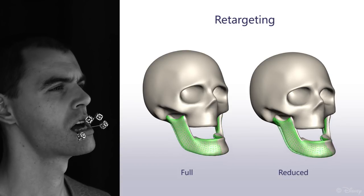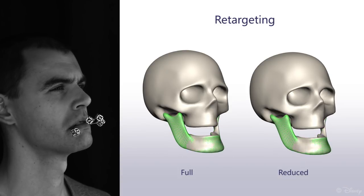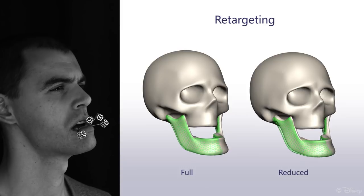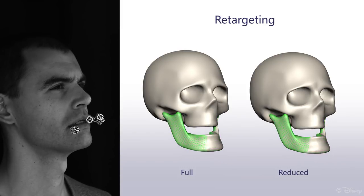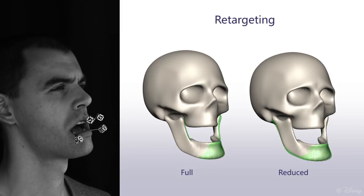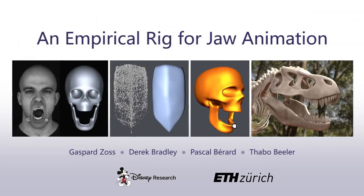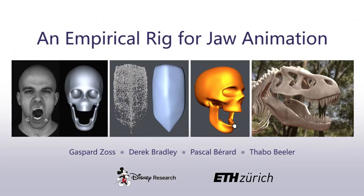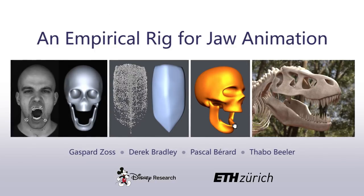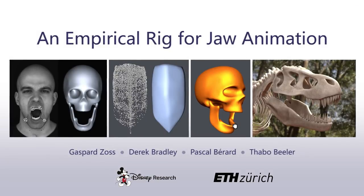Although the full adaptation method produces better results, both retargeting methods yield very plausible jaw rigs from very little input which is easy to generate. In summary, we present a novel jaw rig empirically designed from captured data that provides more accurate jaw positioning than traditional rigs and constrains the motion to only physiologically possible jaw poses while offering intuitive control for artists.